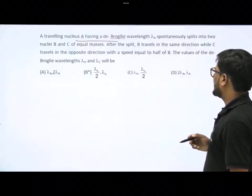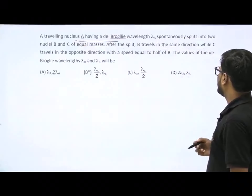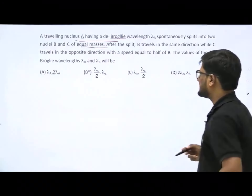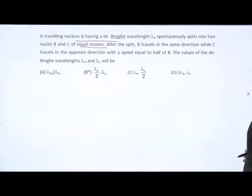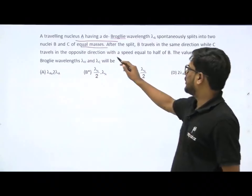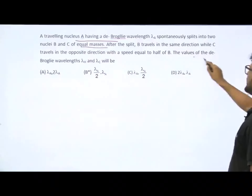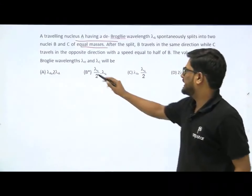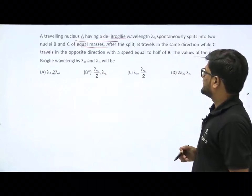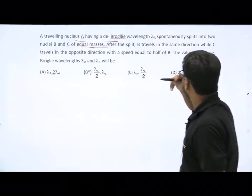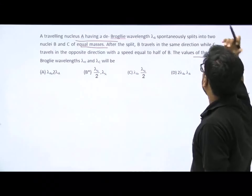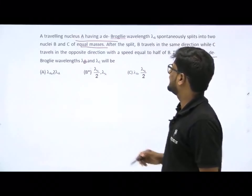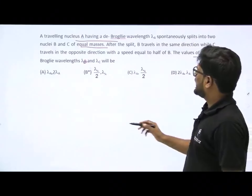Travelling nucleus A having de Broglie wavelength lambda A spontaneously splits into two nuclei B and C of equal masses. After the split, B travels in the same direction while C travels in the opposite direction with a speed equal to half of B. We need to find the values of de Broglie wavelength lambda B and lambda C.